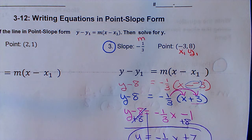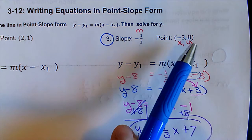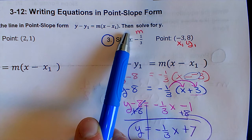Assignment 3-12, writing equations in point-slope form. So the point-slope formula, you're going to need two things: a point, so an ordered pair, and the slope of the line. And you've got your equation right here.